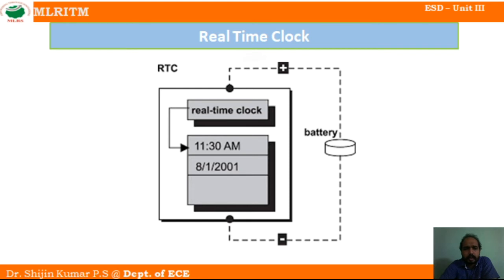This is the block diagram of a real-time clock. We have a real-time circuit connected to the two terminals of the battery. This real-time clock will display the time — for example, 11:30 — and also the date, month, and year. We simply connect a battery to the real-time clock and it will work.